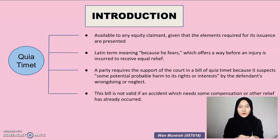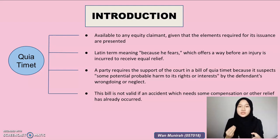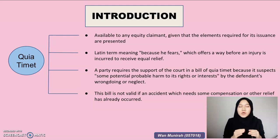Hello, Assalamualaikum warahmatullahi wabarakatuh and a very good day. Basically, a quia timet injunction is an equitable remedy available only in equity. The quia timet remedy is available to any equity claimant given that the elements required for its issuance are presented. Quia timet is a Latin term meaning 'because he fears,' which offers a way — before an injury has occurred — to receive equitable relief.